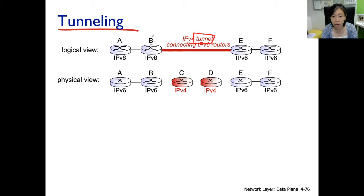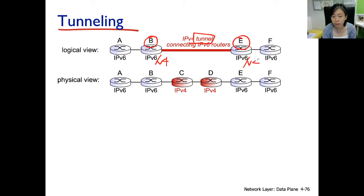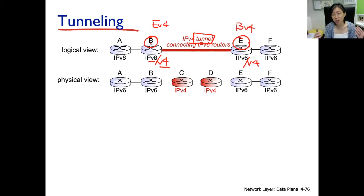B is the border router and E is the border router, separating the version 4 and version 6 spaces. Each implements both version 6 and version 4. Therefore, B and E both carry an IPv6 address as well as an IPv4 address. By setting up the tunnel, B records E's version 4 IP address, and E records B's version 4 IP address — essentially the two ends exchange their IPv4 addresses.